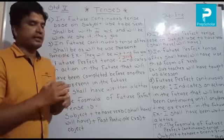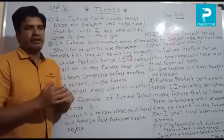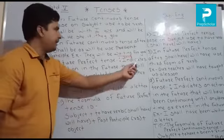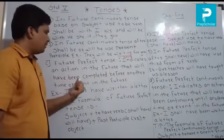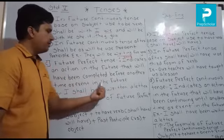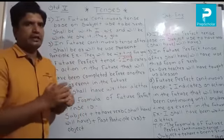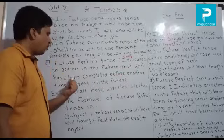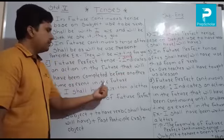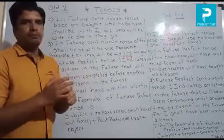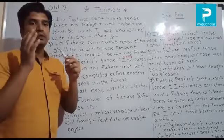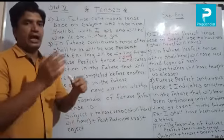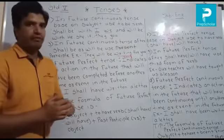Our third subtype of future tense is future perfect tense. The definition of future perfect tense: it indicates an action in the future that will have been completed before another time or event in the future. It is called future perfect tense. For example: I shall have returned a letter.